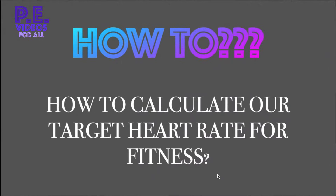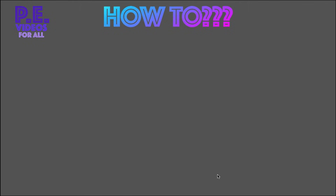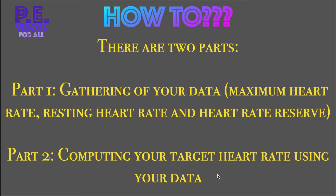This is the procedure on how to calculate our target heart rate. How to calculate our target heart rate for fitness? There are two parts to do this. Part one: gathering of your data — getting your maximum heart rate, resting heart rate, and heart rate reserve. Part two: computing your target heart rate using your data.